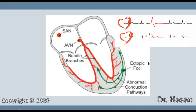This means that the RR distance before the extrasystole is less than the RR distance between normal contractions — this will be a common symptom of all extrasystoles. Extrasystoles have their own signs on the ECG depending on the location of the pathological focus: whether it is in the atria, in the AV node, or in the ventricles of the heart.